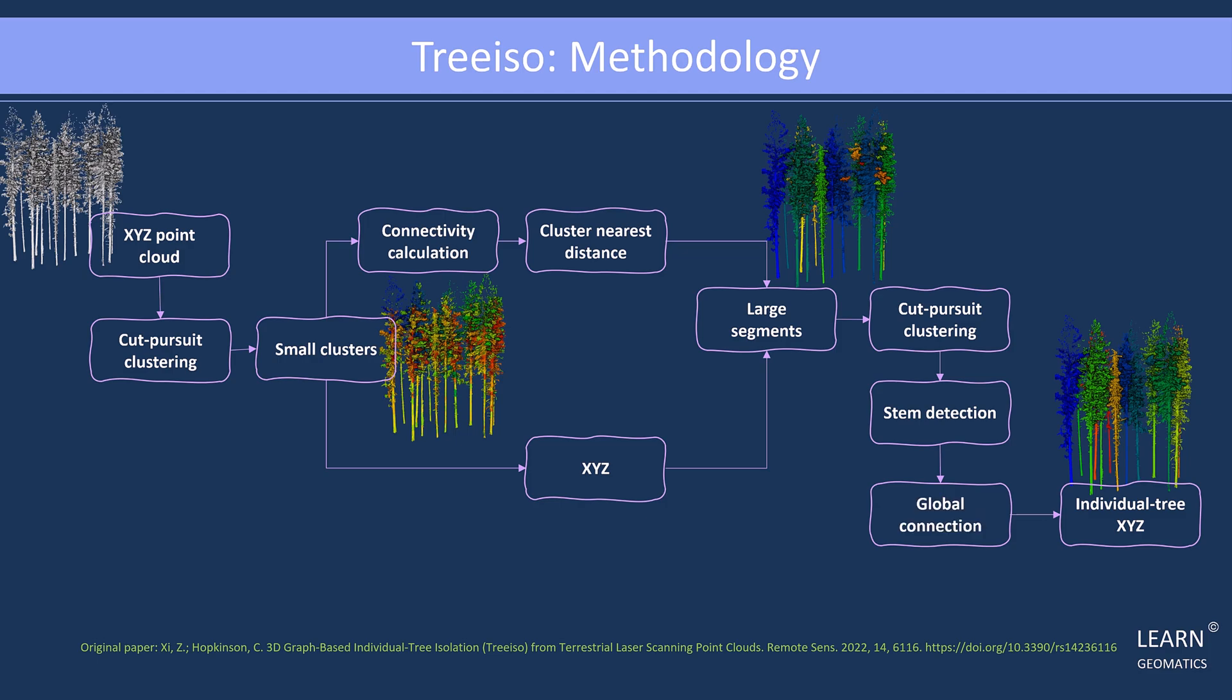By considering information from the nearest neighbors, including elevation difference to length ratios and various measures of proximity, the algorithm merges non-stem segments to their nearest stems. This merging process continues until no non-stem segments remain, resulting in an accurate and comprehensive individual tree segmentation.